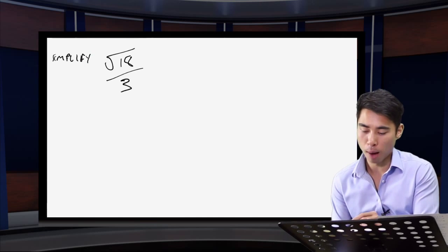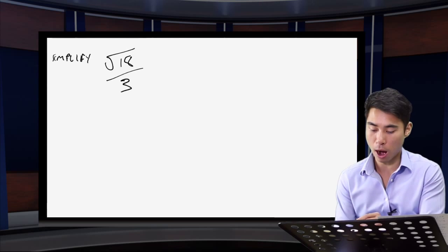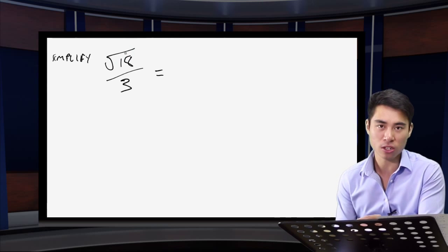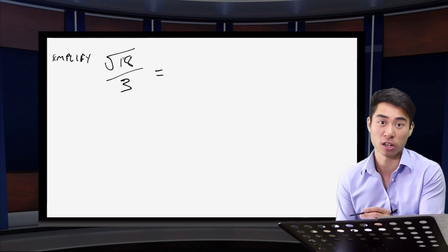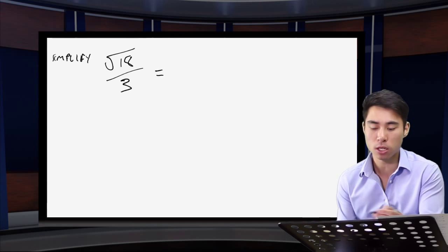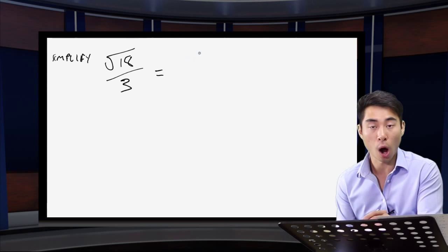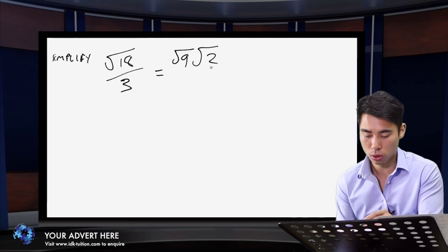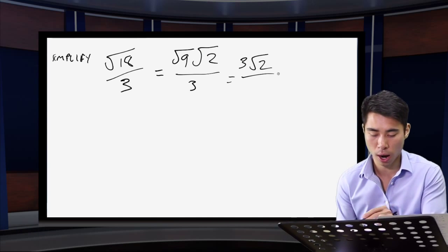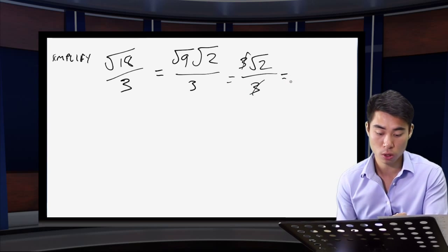Continuing with root 18 over 3: root 18 equals root 9 root 2, which is 3 root 2. The bottom of the fraction stays as 3. So I have 3 root 2 over 3 — and notice these cancel, giving a final answer of root 2. One more example: root 72 over 3. Which square numbers go into 72? Both 36 and 9 do.